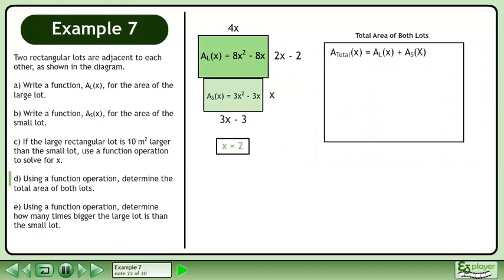The total area of the two rectangles is found by adding together the areas of the individual rectangles. Replace the area of the large rectangle with 8x²-8x and replace the area of the small rectangle with 3x²-3x.